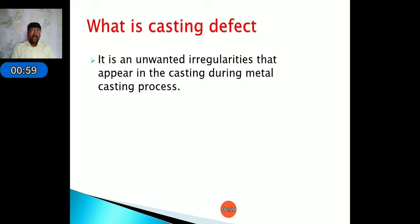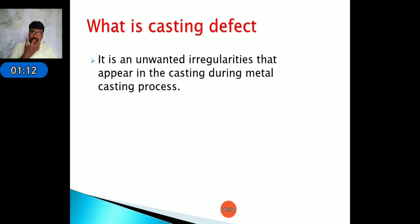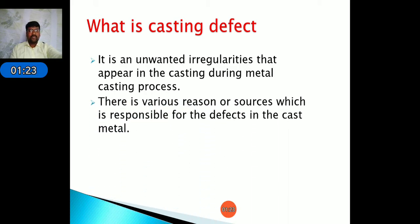A casting defect is an unwanted irregularity that appears in the casting during the metal casting process. During the casting process there is solidification time and pouring time — already discussed in gating system design — and the gating ratio and pouring time all affect the casting. There are various sources responsible for defects in the casting of metal.